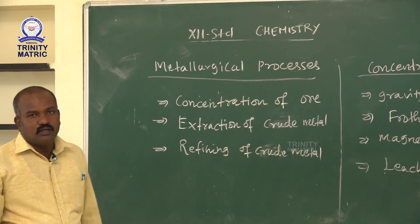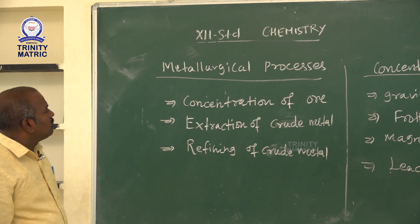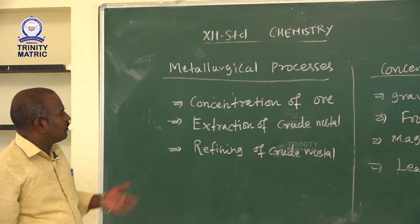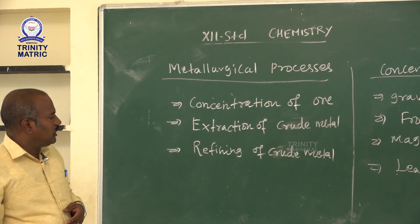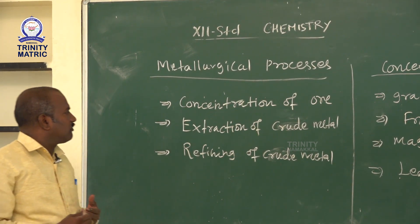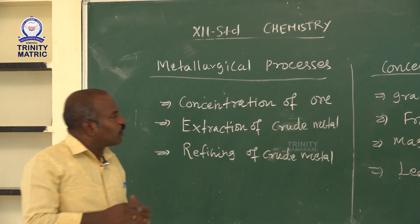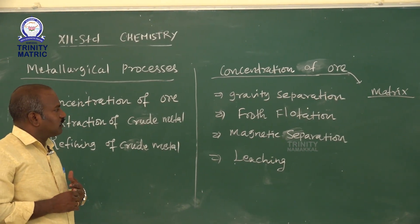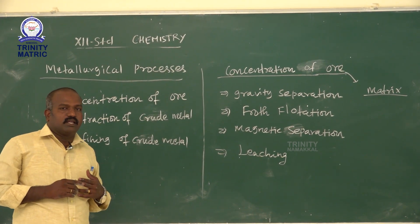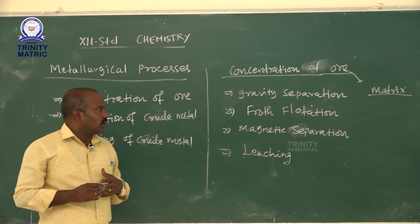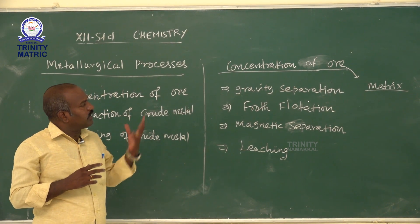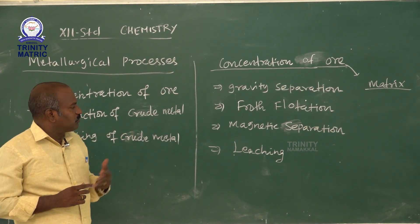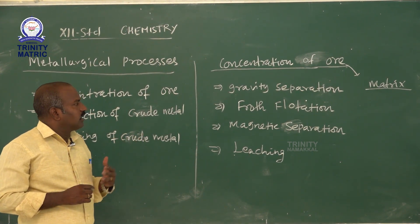Next, the metallurgical process. The methods involved in the metallurgical process are: concentration of ore, extraction of crude metal, and refining of crude metal. In the concentration of ore, unwanted impurities are present in the ore — that is called the matrix or gangue. The methods to remove the impurity are gravity separation, froth flotation process, magnetic separation, and leaching.